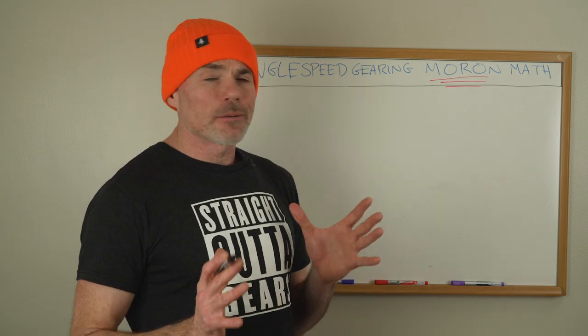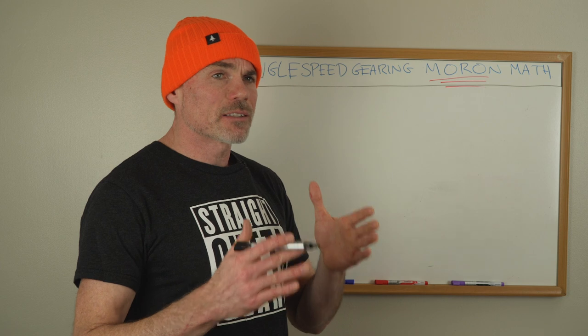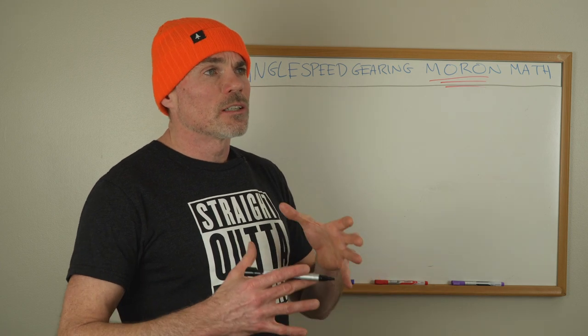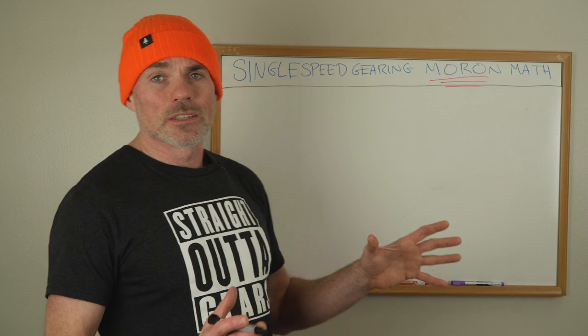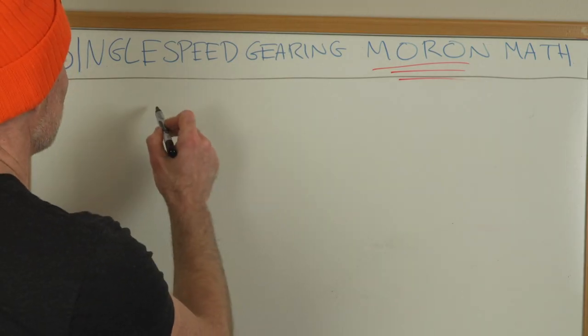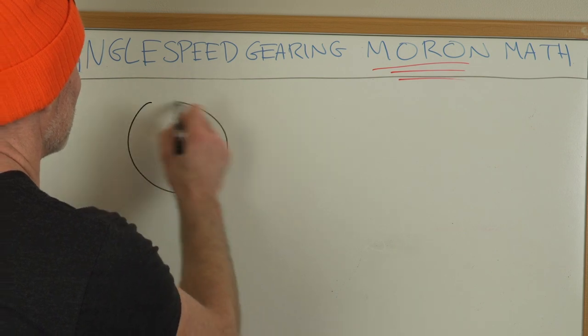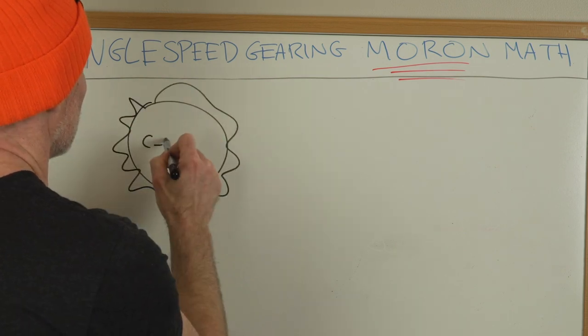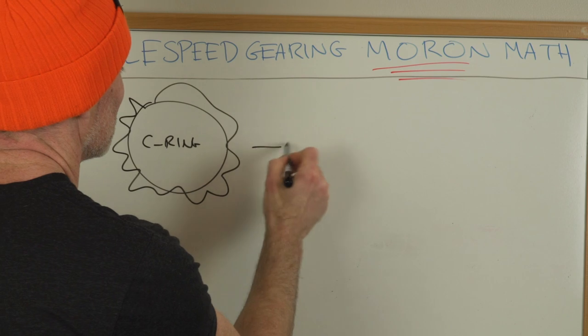So like I said, I'm not a mathematical genius. My math skills are limited to calculating the tip in a restaurant and this equation that determines gear inches. So to determine gear inches of your drivetrain, you're going to divide the chain ring, call it a C ring, by the cog.